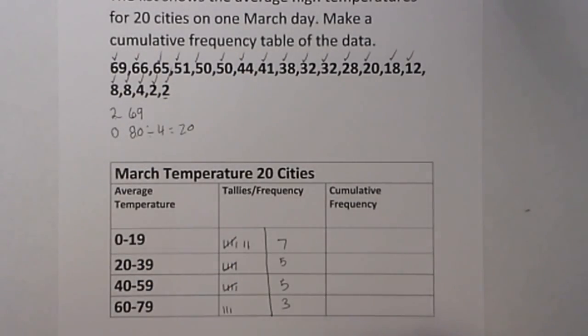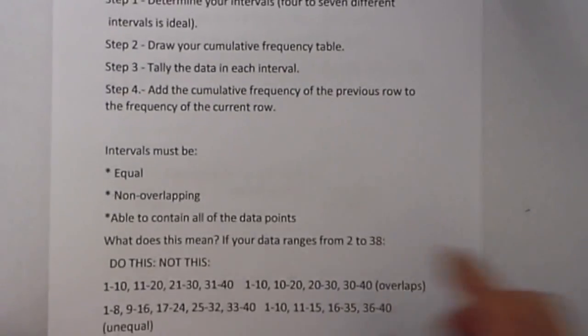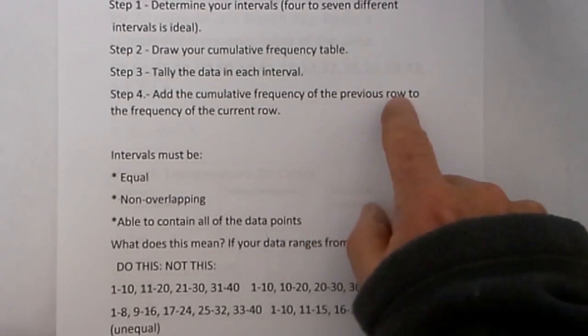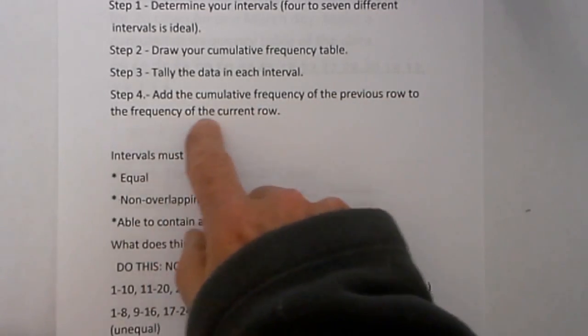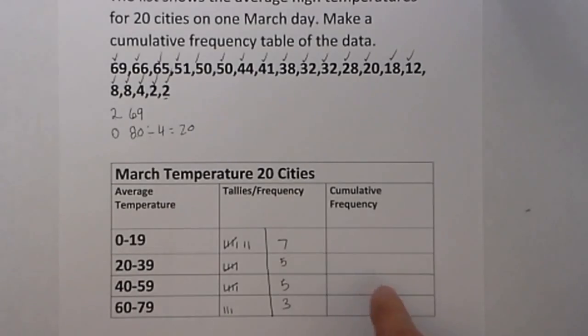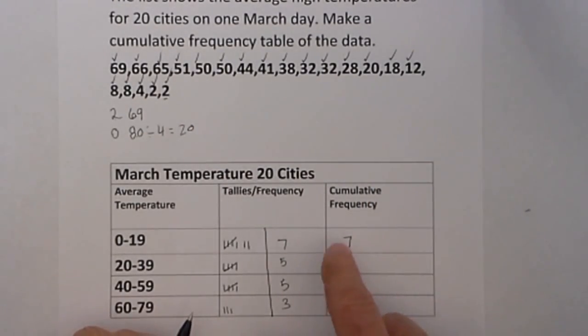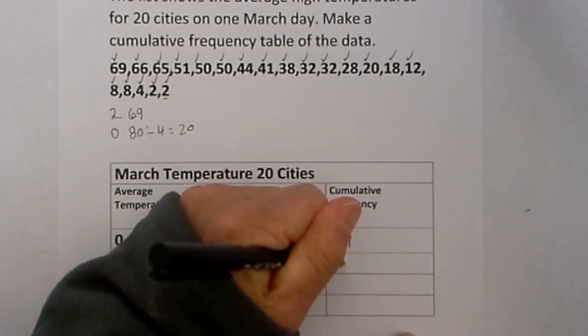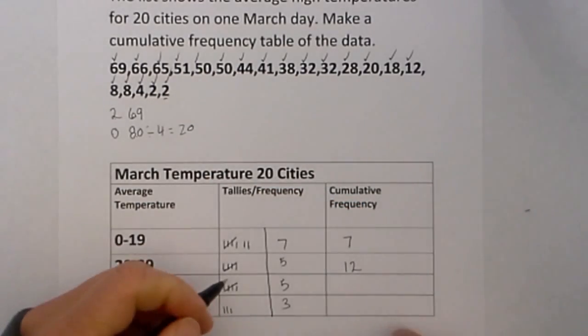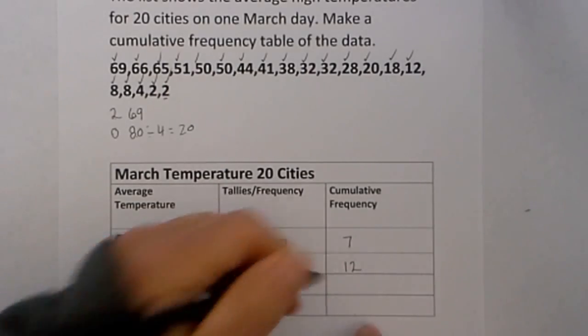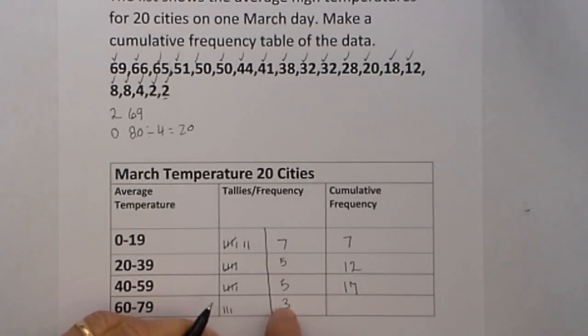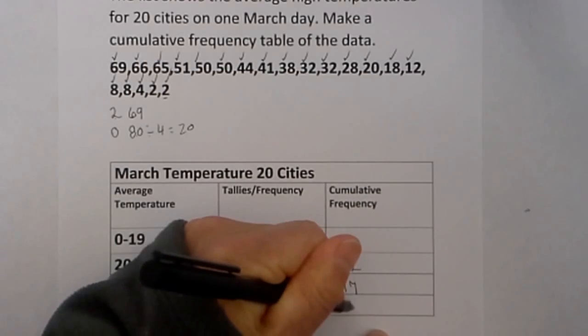Now in order to create the cumulative frequency, remember it says add the cumulative frequency of the previous row to the current row. So I will begin here. Since there is not a previous row, I will begin with 7. And now I add this previous row to the current, which is 5. 7 plus 5 is 12. And then I add the previous to the current. 12 plus 5 is 17, and 17 plus 3 is equal to 20.